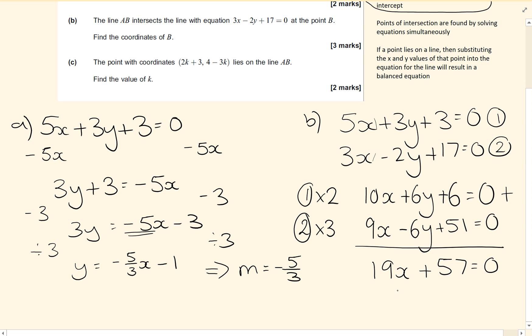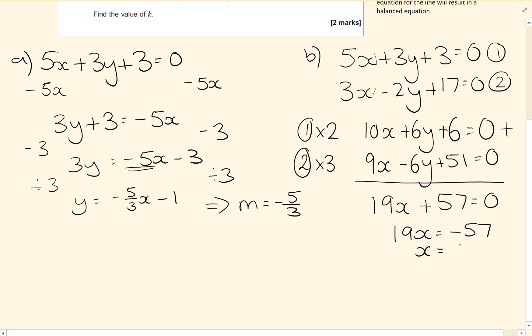And rearrange this, 19x equals minus 57, and x equals, in this case it's minus 3, because 19 times 3 is 57.